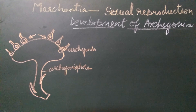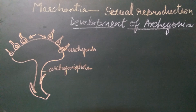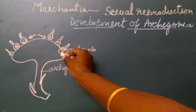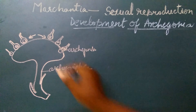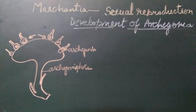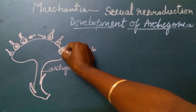Let us see how the archegonia develops on the archegoniophore. There are 8 to 9 lobes on the archegoniophore and the tip of each lobe contains a growing region from where the cells of these growing region the archegonia develops. One of the superficial cells very close to the growing region identifies itself as an archegonial initial. This archegonial initial is different from the other cells in the sense that it is bigger than the other cells and has dense cytoplasm.